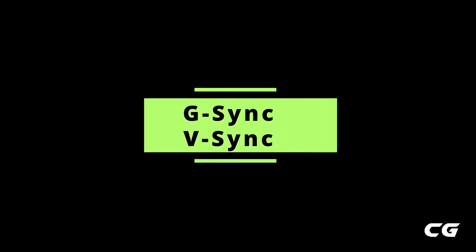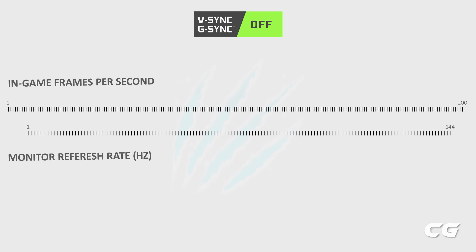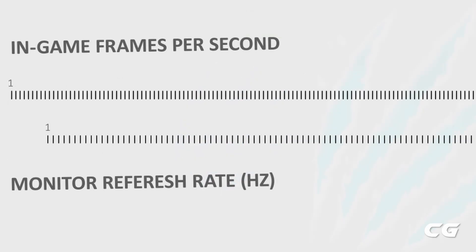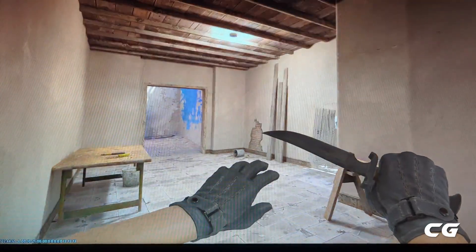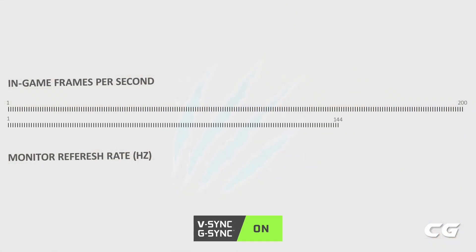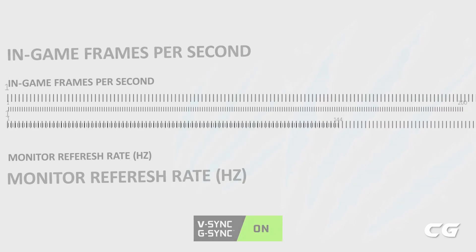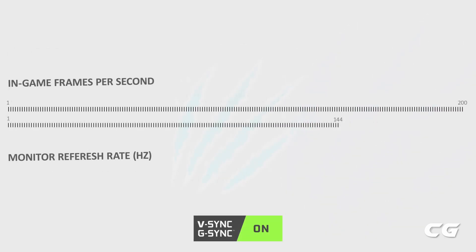Now let's talk about G-Sync and V-Sync. Suppose you have a 144Hz monitor — this means your screen refreshes 144 times every second, allowing you to see up to 144 frames per second. If you're getting 200 FPS in-game, that's higher than your monitor's refresh rate, which causes screen tearing, making your video look out of sync and not smooth. Using G-Sync or V-Sync synchronizes your in-game FPS with your monitor refresh rate, giving you a smoother gaming experience.